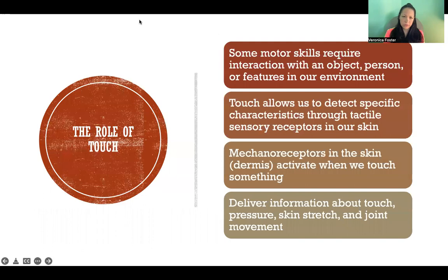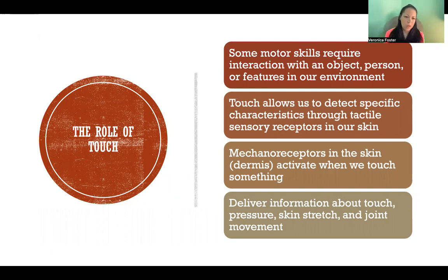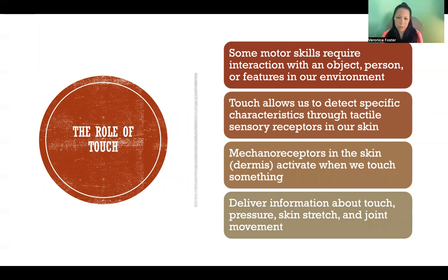Some motor skills are heavily dependent on touch. Some motor skills require interaction with an object, person, or other features in the environment. When we interact with other features in the environment or any kind of object or person, we are collecting touch sensory feedback that is going back to our control center, and then we make corrections to the movement and send that back out to hone our movement.